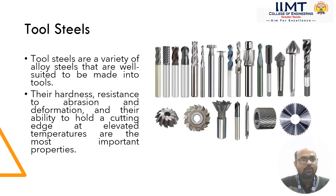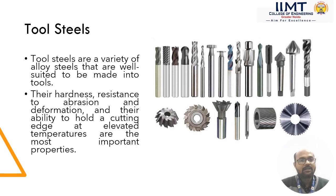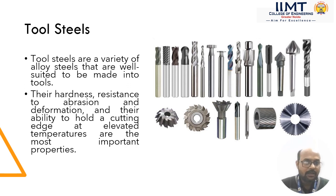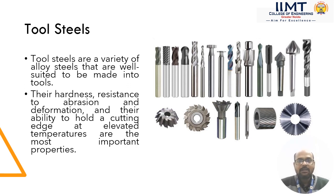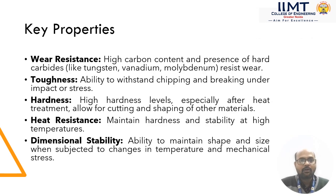Now we will discuss tool steels. Stainless steels which are used for making manufacturing tools are known as tool steels. Tool steels are a variety of alloy steels that are well suited to be made into tools. The key properties of tool steels are their hardness, resistance to abrasion and deformation, and their ability to hold a cutting edge at elevated temperatures. In the figure we can see the different types of drilling, boring, reaming, cutting and milling tools which are made by tool steels. One key property is wear resistance.